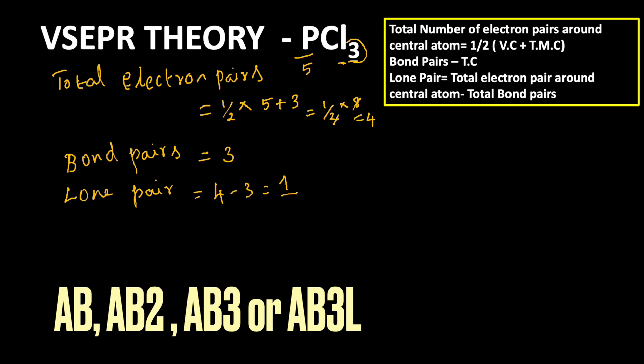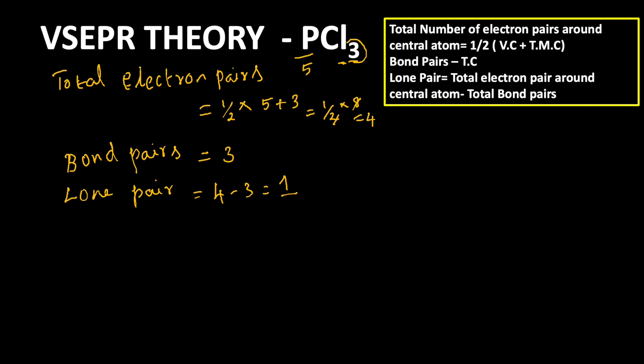Using this information we can predict the molecular type of the molecule, whether it is AB, AB2, AB3, or AB3L. Here A represents the central atom, B represents the atoms attached to the central atom, and L represents the lone pair. In the PCl3 molecule there is one central atom phosphorus (A), three chlorine atoms attached (B3), and one lone pair (L). So the molecular type is AB3L.